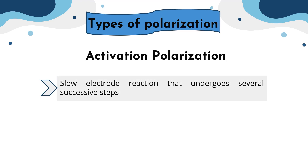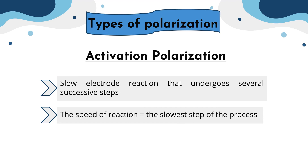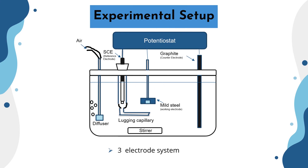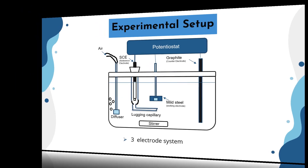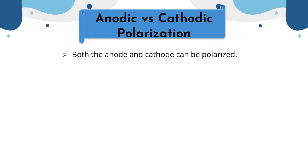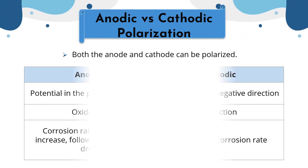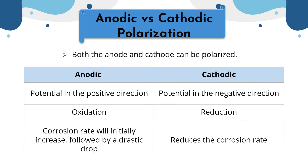Activation polarization is caused by a slow electrode reaction that undergoes several successive steps. The speed of the overall reaction is determined by the slowest step of the process. The experimental setup for the polarization process is the three-electrode system. Both the anode and cathode can be polarized. Anodic polarization changes the electrode's potential in the positive direction, while cathodic polarization changes the potential in the negative direction.